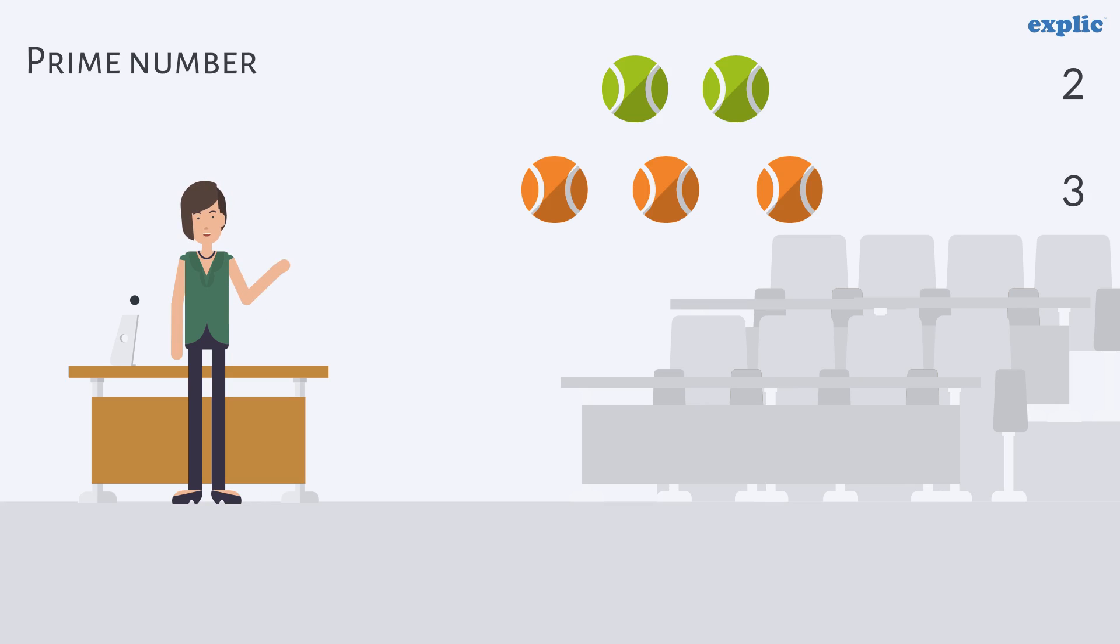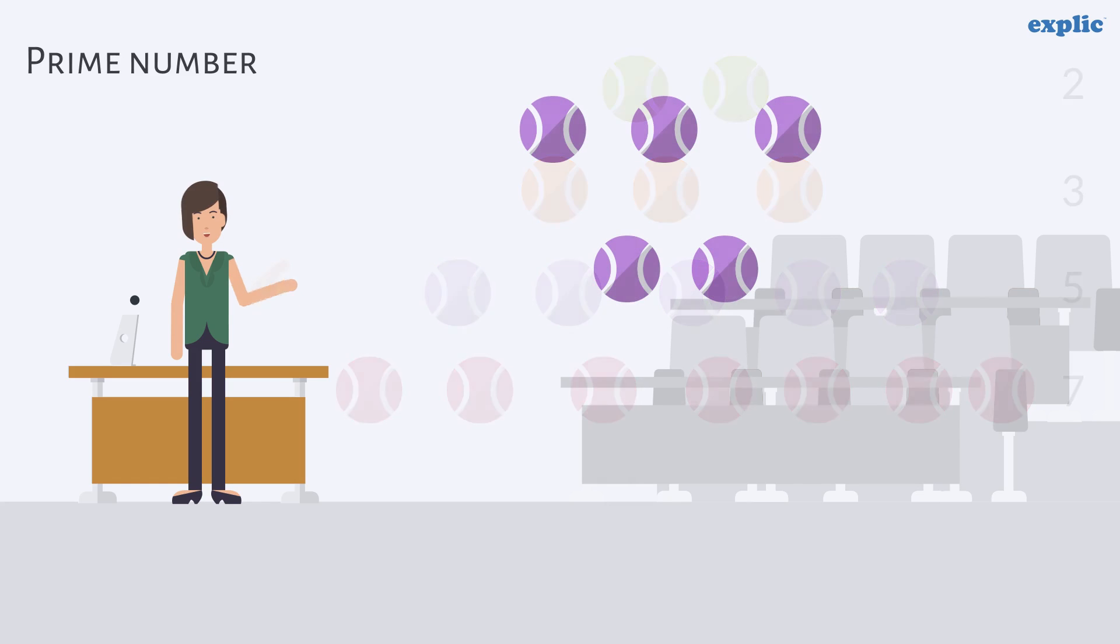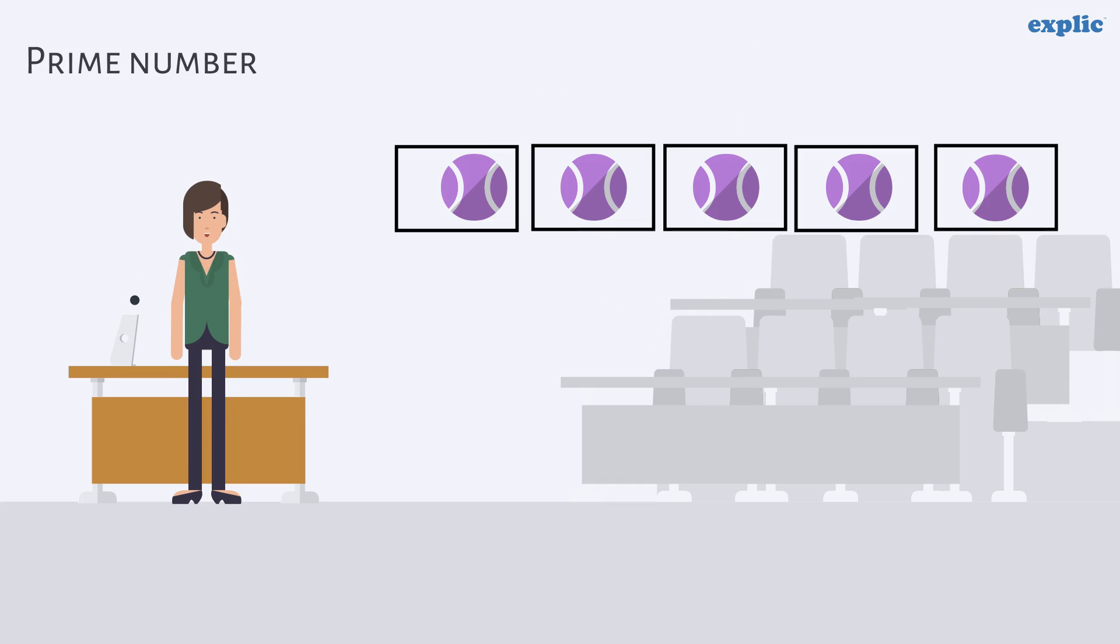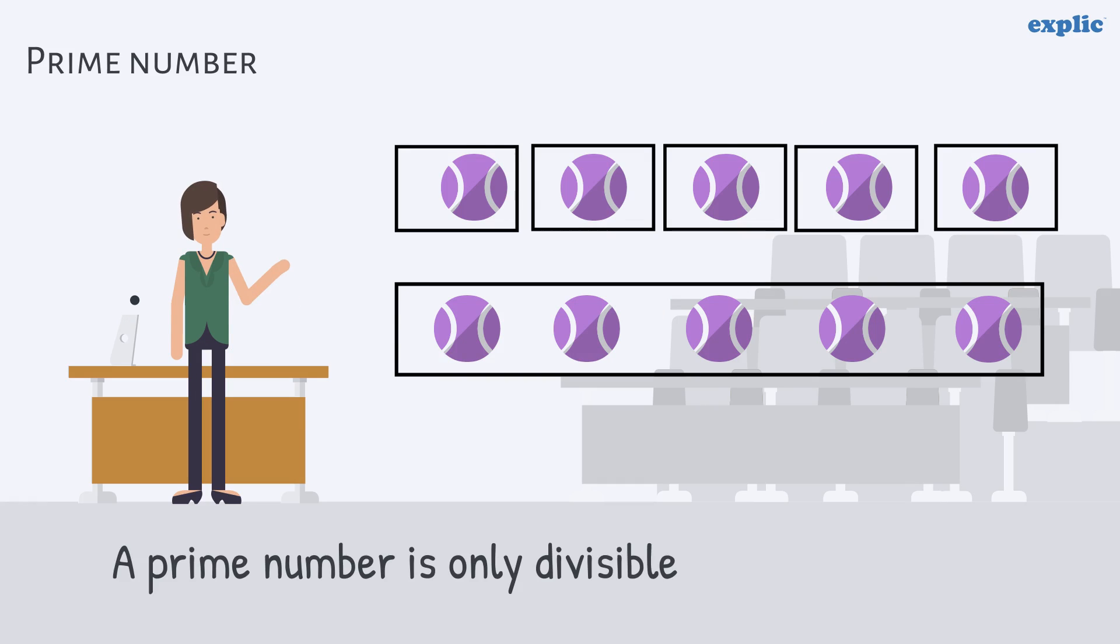For example, 2, 3, 5 and 7. These numbers cannot be divided evenly. 5 can only be divided into one group of 5 or 5 groups of 1.